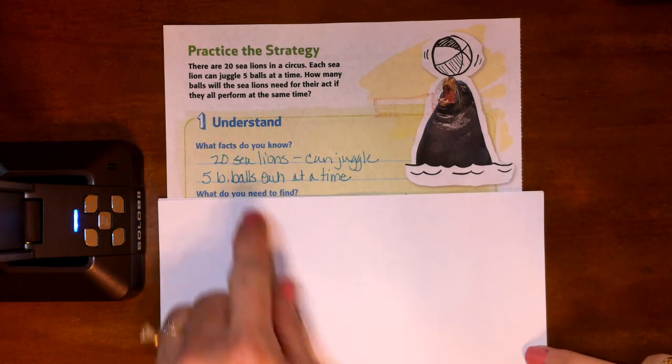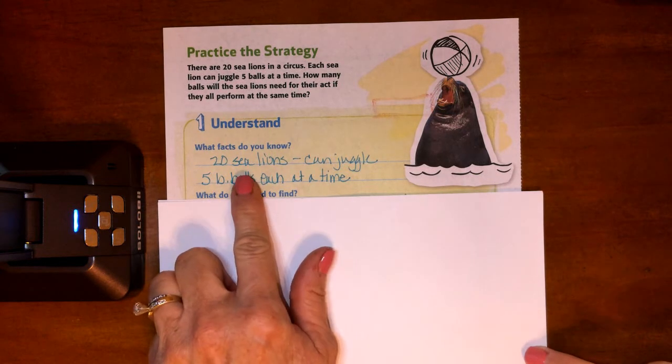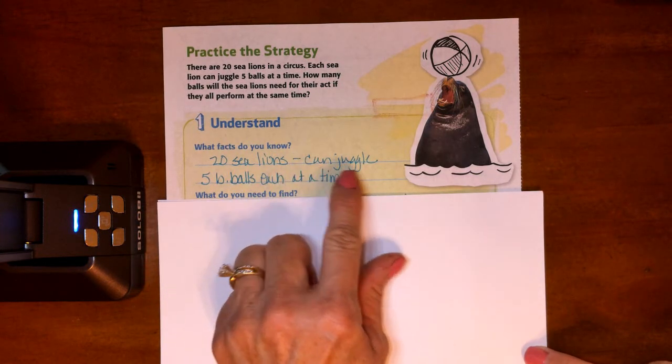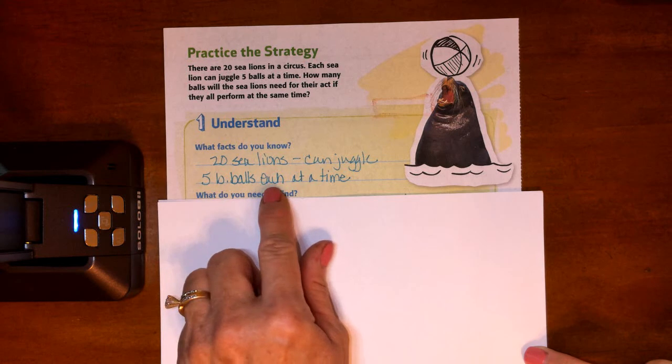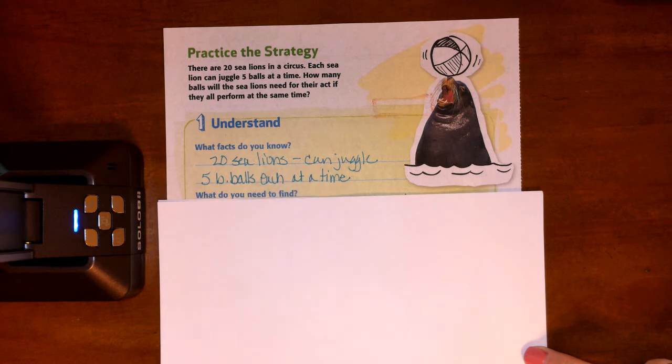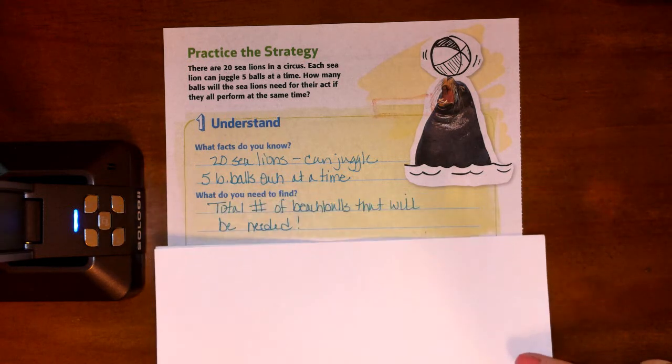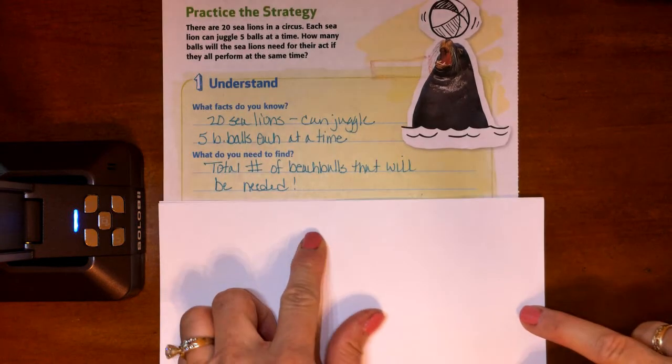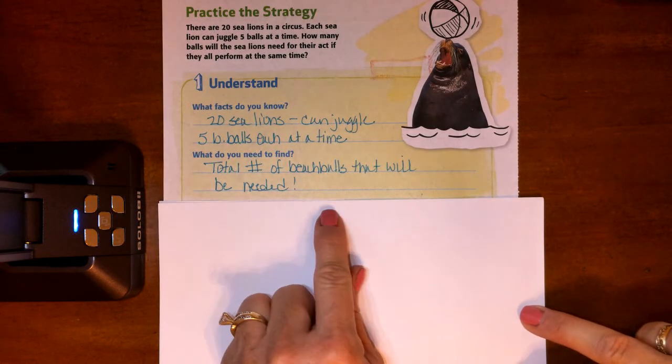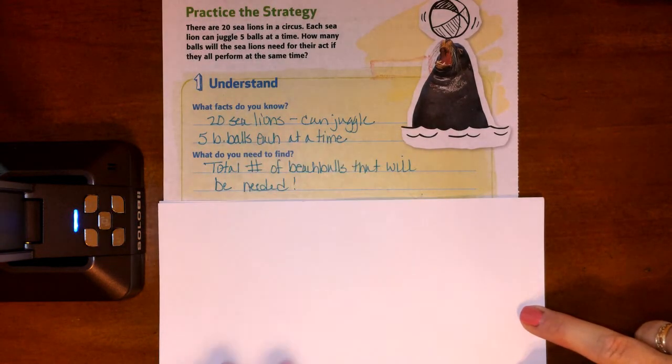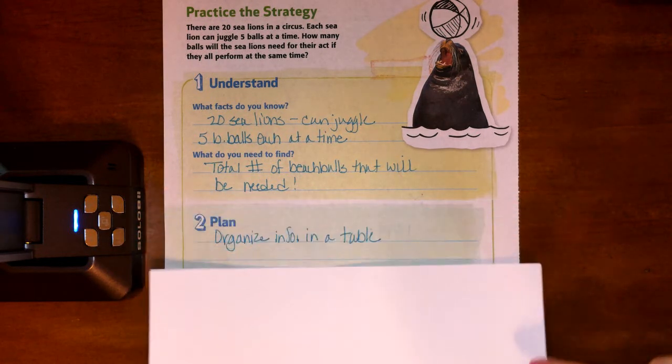So what do we know? We know that 20 sea lions, okay, and they can juggle five beach balls each at a time. Okay. What do we need to find? We need to find the total number of beach balls that this circus is going to need for every sea lion to perform at the same time.